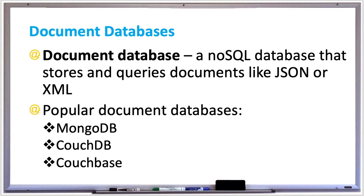If the document database has eventual consistency, no replicated primary is specified. Replicas handle the updates and make their way to the other replicas asynchronously. A read is just sent to any replica and may return something out of date.